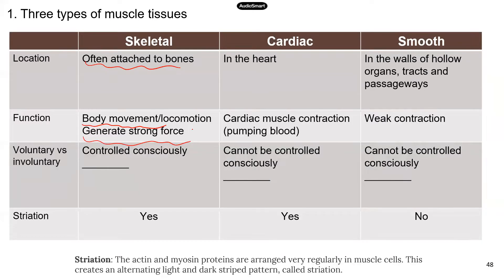Cardiac muscles are found in the heart, and these cardiac muscles contract — that's basically what the heartbeat is. When the muscles contract, they pump blood into your body. And lastly, smooth muscle is probably the weakest muscle among all three. Smooth muscle does not generate a very strong force; they generate a consistent but weak contraction.